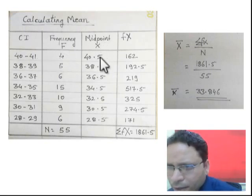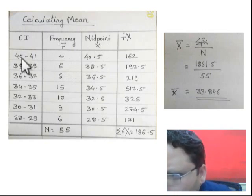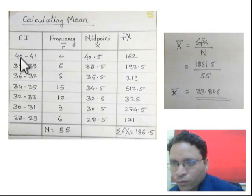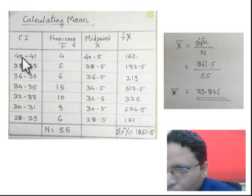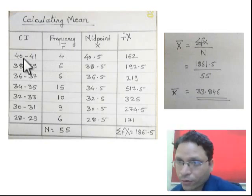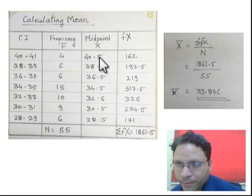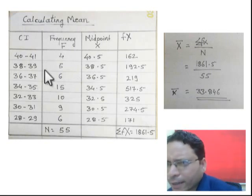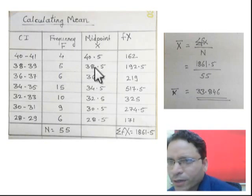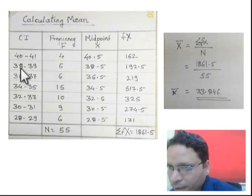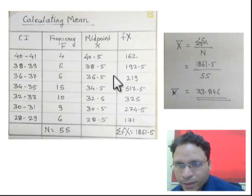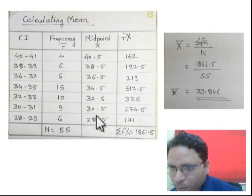How to calculate midpoint or x? We have this CI column and frequency column. Now we have to calculate midpoint of each of this. Let's see the midpoint of first row, it is 40 to 41. The midpoint is 40.5. How is it 40.5? Simply we can add 40 plus 41 divided by 2, you can get this value 40.5. This way, 38 and 39, the midpoint is 38.5. You can add both numbers, 38 plus 39, and divide by 2. This way we can make the midpoint.